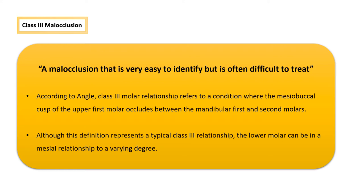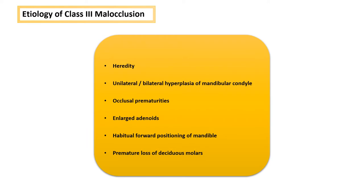This is one of the easiest classifications you can identify on a patient, yet it is quite difficult to treat. Here are some of the etiologies of Class 3 malocclusion: heredity, unilateral or bilateral hyperplasia of the mandibular condyle, occlusal prematurities, enlarged adenoids, habitual forward positioning of the mandible, and premature loss of deciduous molars. One or more of these can lead to a Class 3 malocclusion.